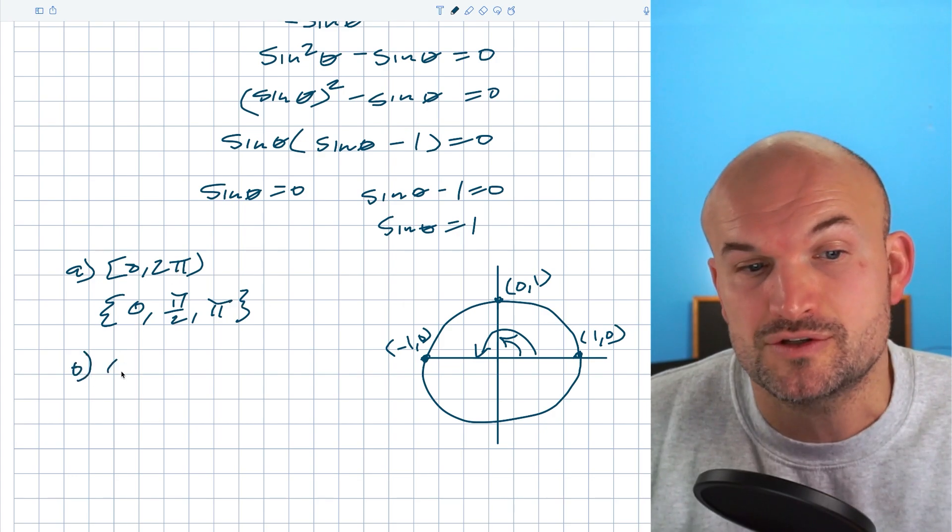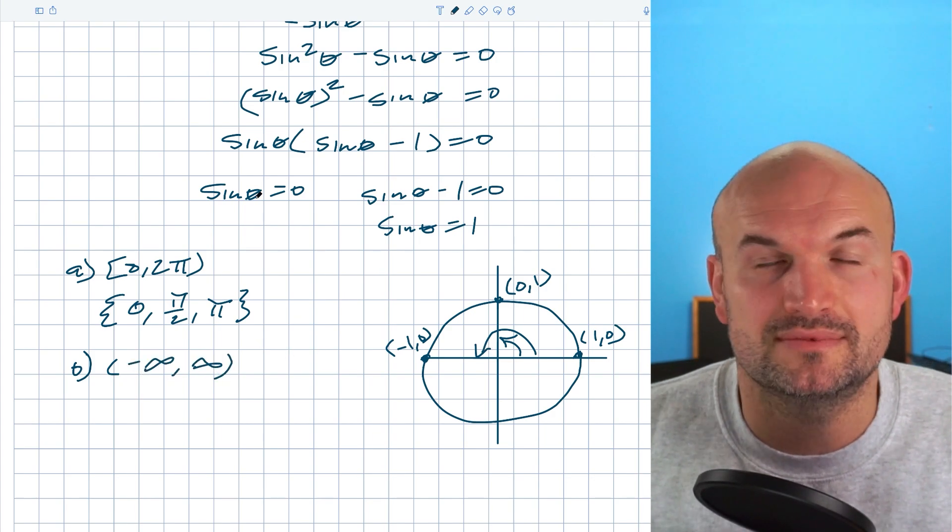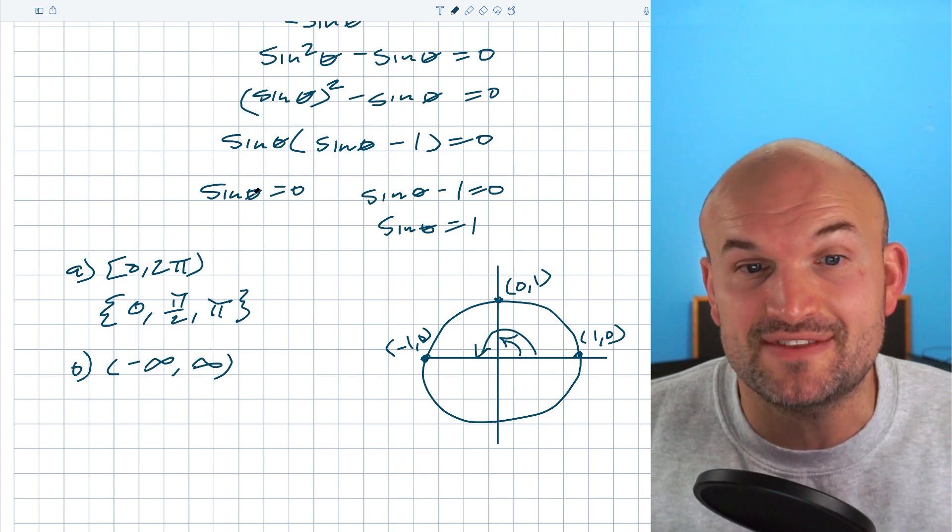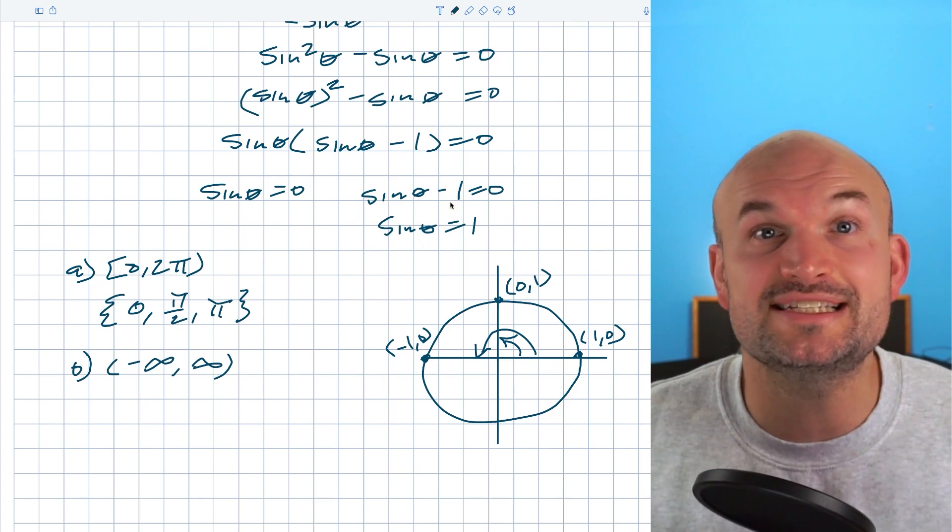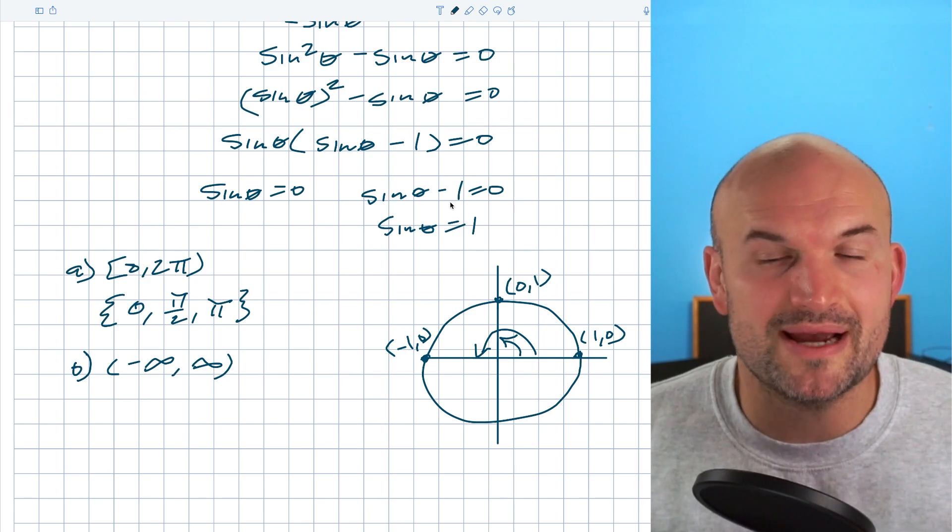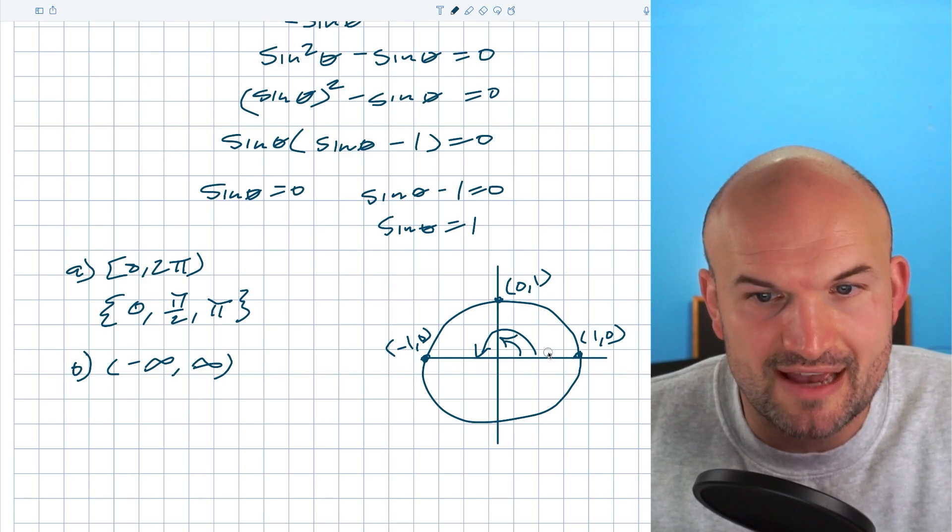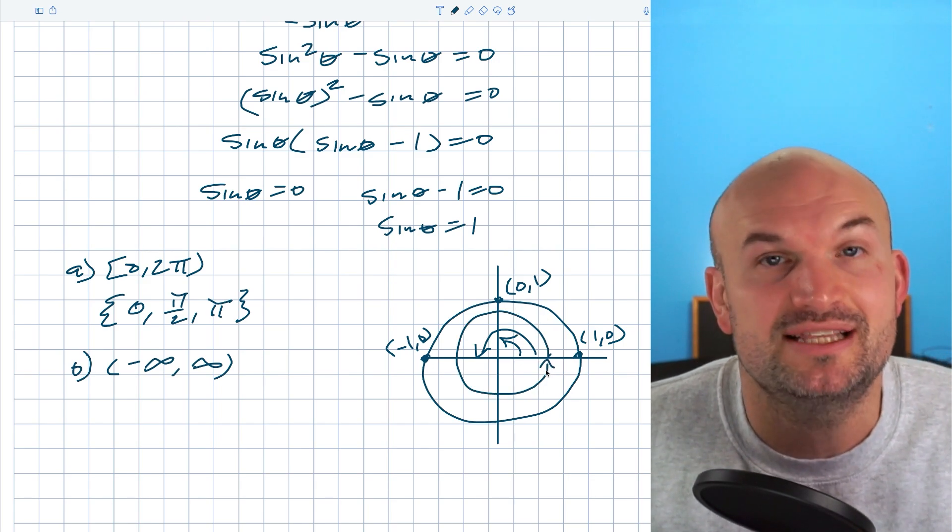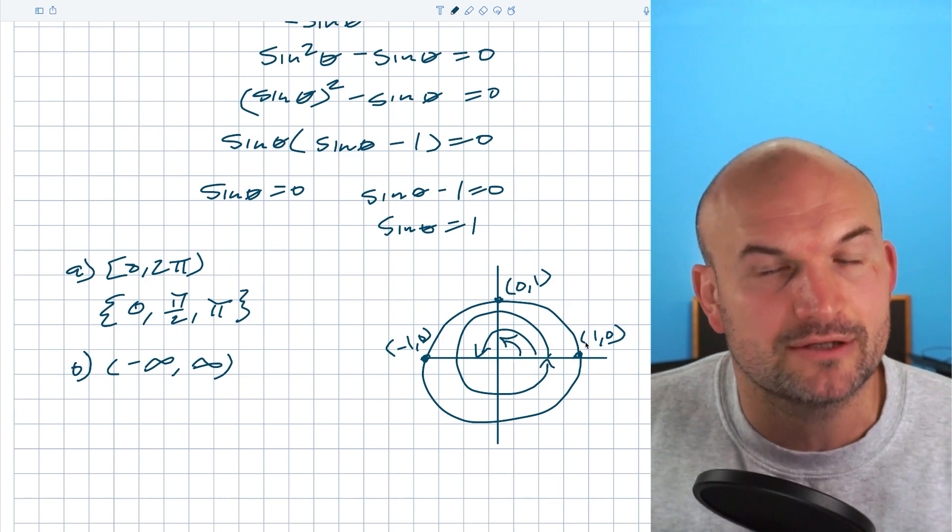What about if we want to find all of the solutions? That's going to be from negative infinity to infinity. Basically there's going to be no restriction. I can keep on finding the angle where sine of theta equals zero and sine of theta equals one. Remember the sine graph continues its pattern indefinitely. So the best way I like to understand this is just to add two pi to each one of these angles because if this is a solution, if I just add two pi that takes me back to the exact same angle. The sine of that angle, which in this case would be four pi, is equal to zero.